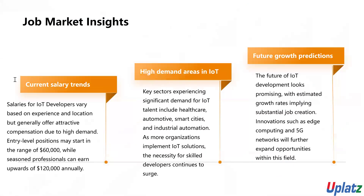Salaries for IoT developers depend on their level of experience, location, and industry. The approximate annual salary ranges are: $60,000–$80,000 for entry-level developers, $80,000–$100,000 for mid-level developers, and $100,000–$130,000 for senior-level developers. Salaries may vary depending on specific roles and company size, and developers in high-demand areas or with specialized expertise can earn more.